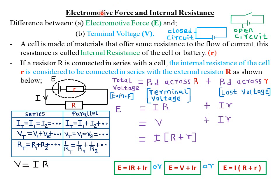Today we're looking at the difference between electromotive force (EMF) and the internal resistance. Let's start by defining what we mean by electromotive force and the terminal voltage, although we defined them in form one under cells and simple circuits. Electromotive force, denoted by capital E, simply refers to the potential difference across the terminals of a cell when it is supplying no charge. Alternatively, EMF can also be defined as the potential difference across the terminals of a cell when the circuit is open. When the circuit is open, it simply means that no current is flowing through that particular circuit, such as the one shown here.